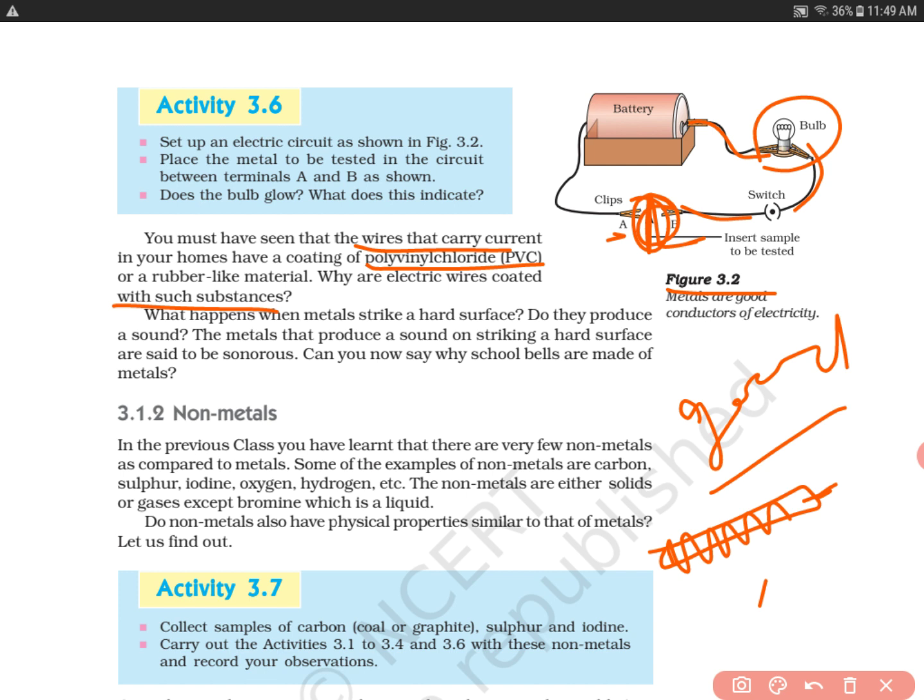That's why all electricians who do electric repairs always wear gloves made of rubber. Their shoes are also rubber shoes, because rubber is an insulator. By chance, if a short circuit happens, the person does not get electrocuted.